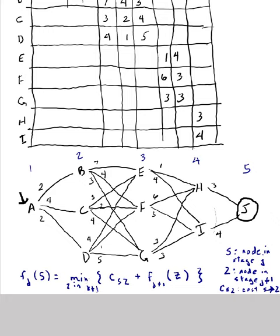This reads J plus 1. C of SZ - well, S is a node and C of SZ is the cost to go from node S to node Z. Now S is a node in the current stage, in the stage J.